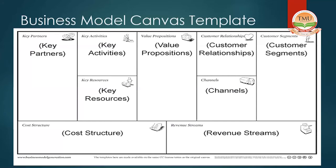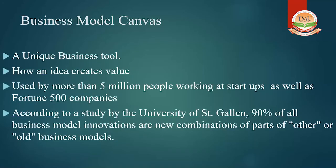This model was propounded by Alexander Osterwalder and Yves Pigneur. In 2005, they came up with the theory that we can give shape to our thoughts by putting it on a concrete canvas in nine building cells. Whenever any business has to be started, we have to identify what are those core areas where we need to put up our efforts.